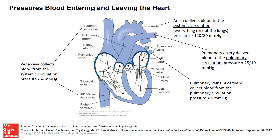Blood flows into the right side of the heart via the superior and the inferior vena cava, which are fed by the systemic vascular beds — all the vessels of the body with the exception of the lungs. The right ventricle pumps blood to the lungs. Blood flows back from the lungs, returning via the pulmonary veins into the left side of the heart. Blood is then pumped from the left ventricle out through the aorta to the systemic circulation.